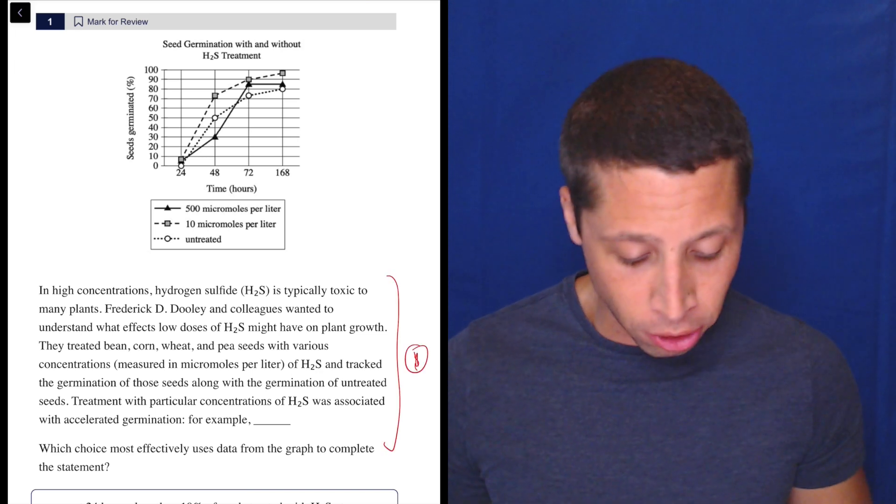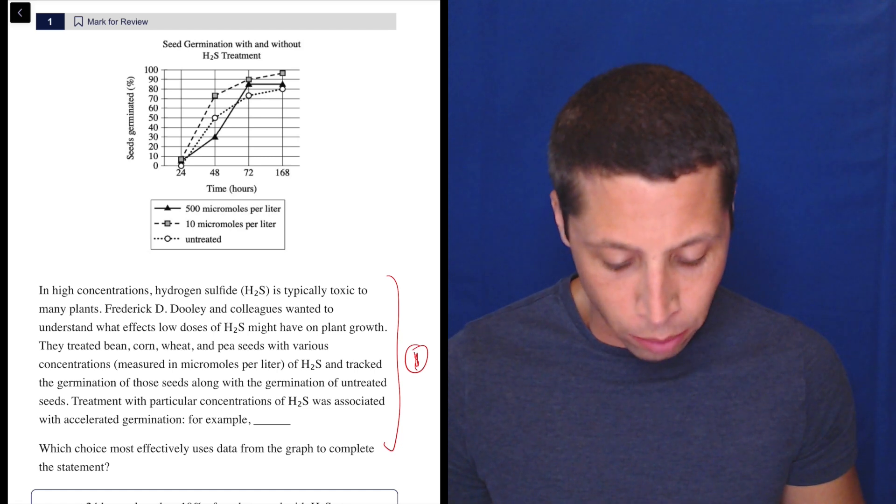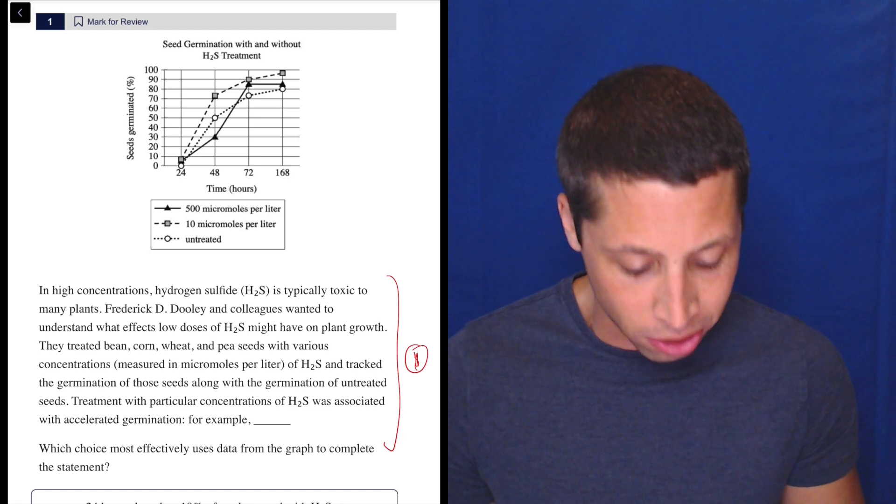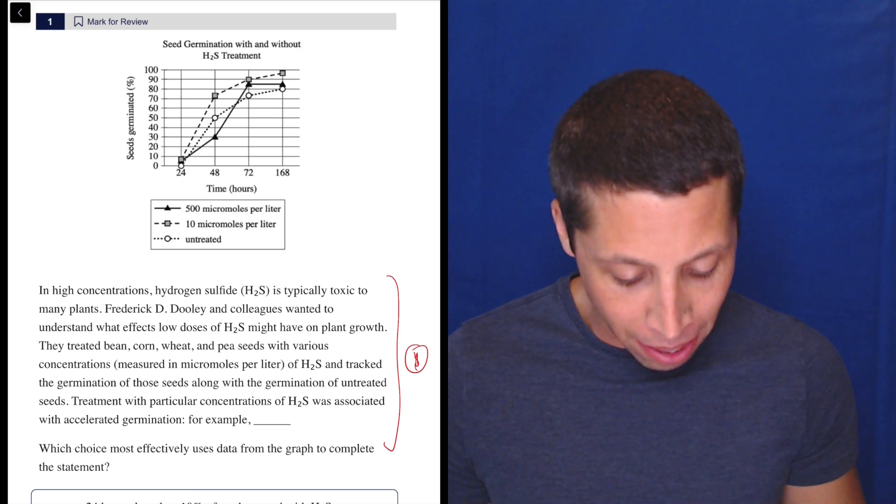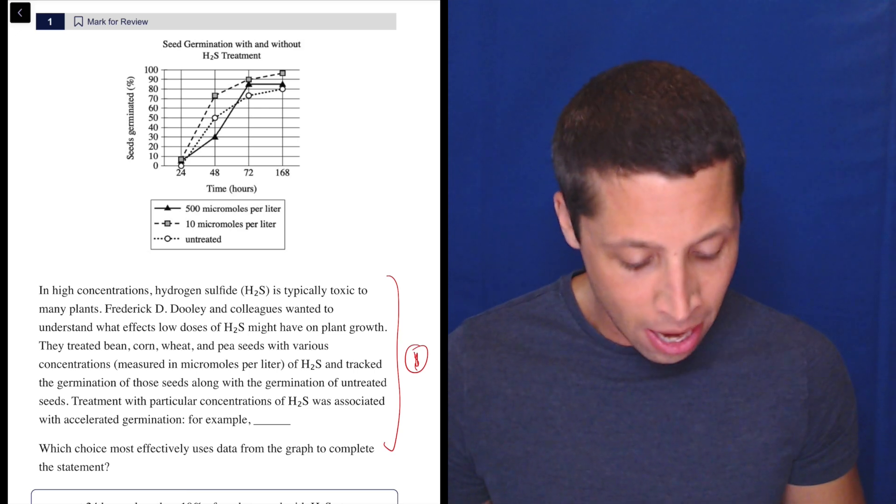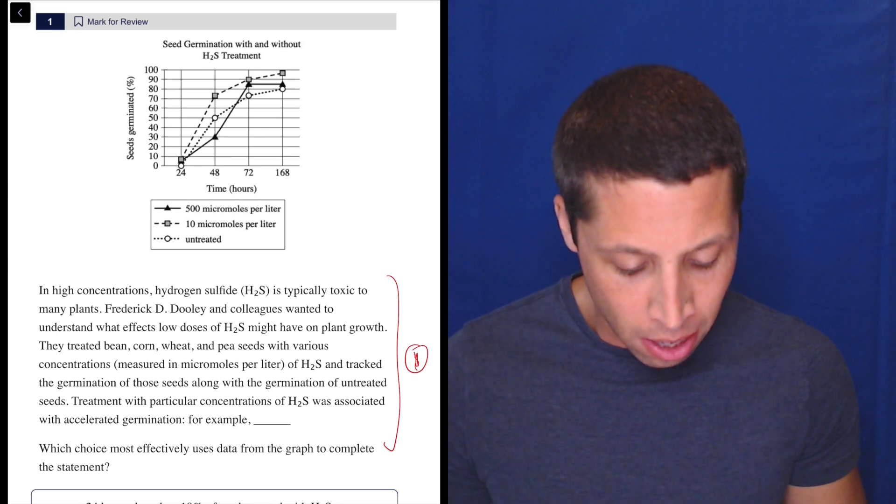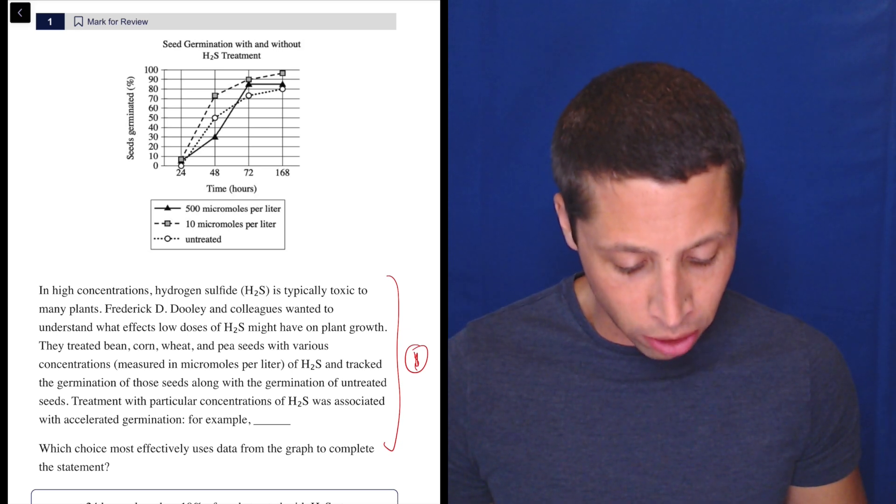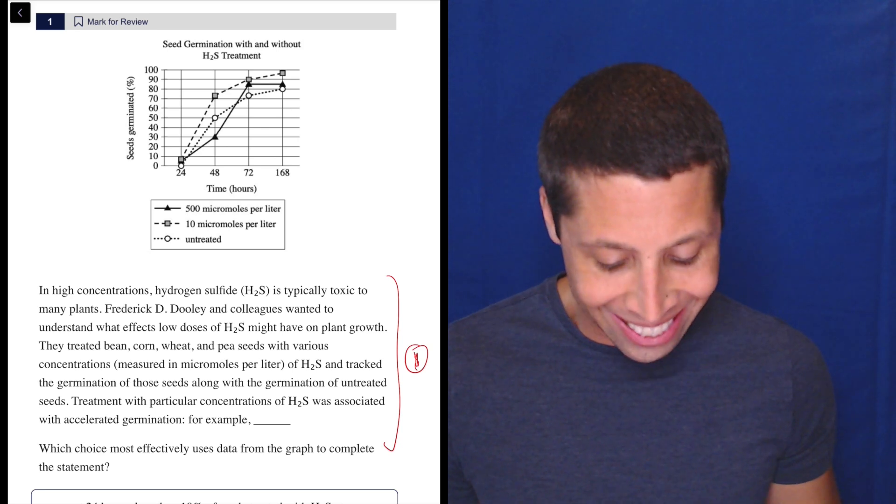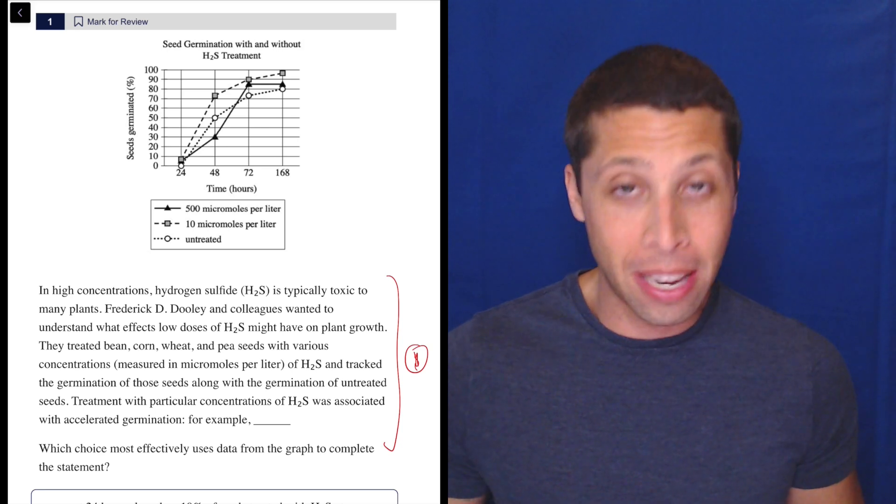Step one. In high concentrations, hydrogen sulfide is typically toxic to many plants. Frederick Dooley and colleagues wanted to understand what effects low doses of H2S might have on plant growth. They treated bean, corn, wheat, and pea seeds with various concentrations of hydrogen sulfide and tracked the germination of those seeds along with the germination of untreated seeds. Treatment with particular concentrations of hydrogen sulfide was associated with accelerated germination. For example.